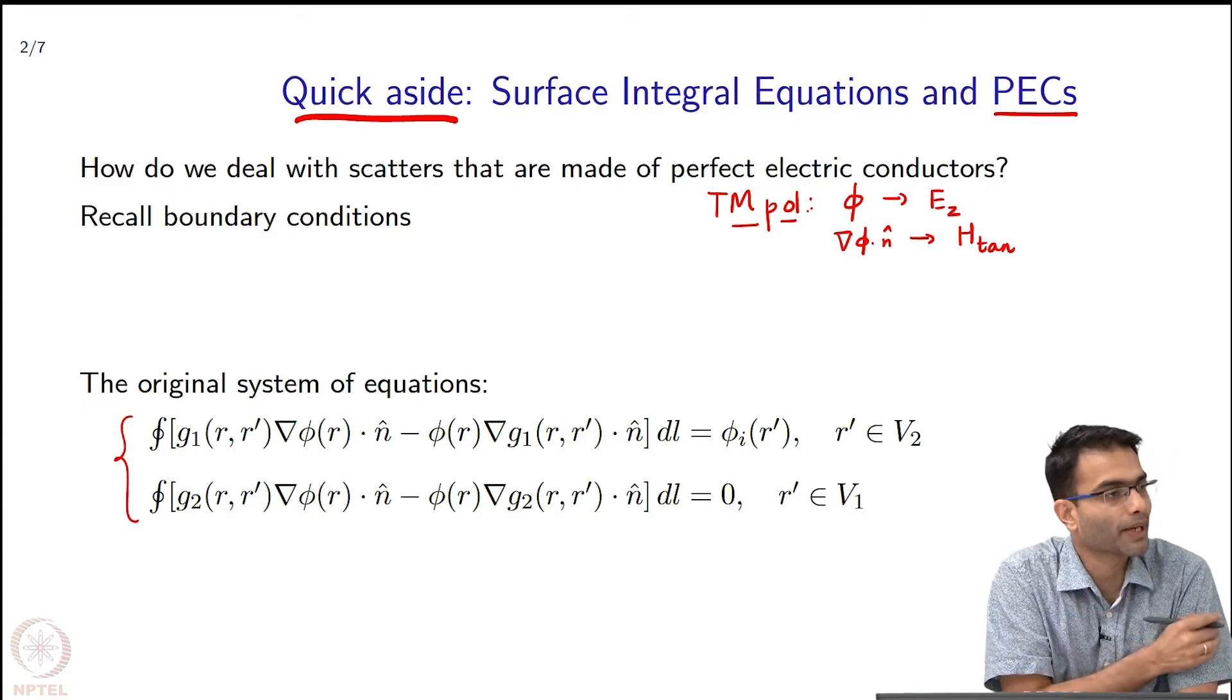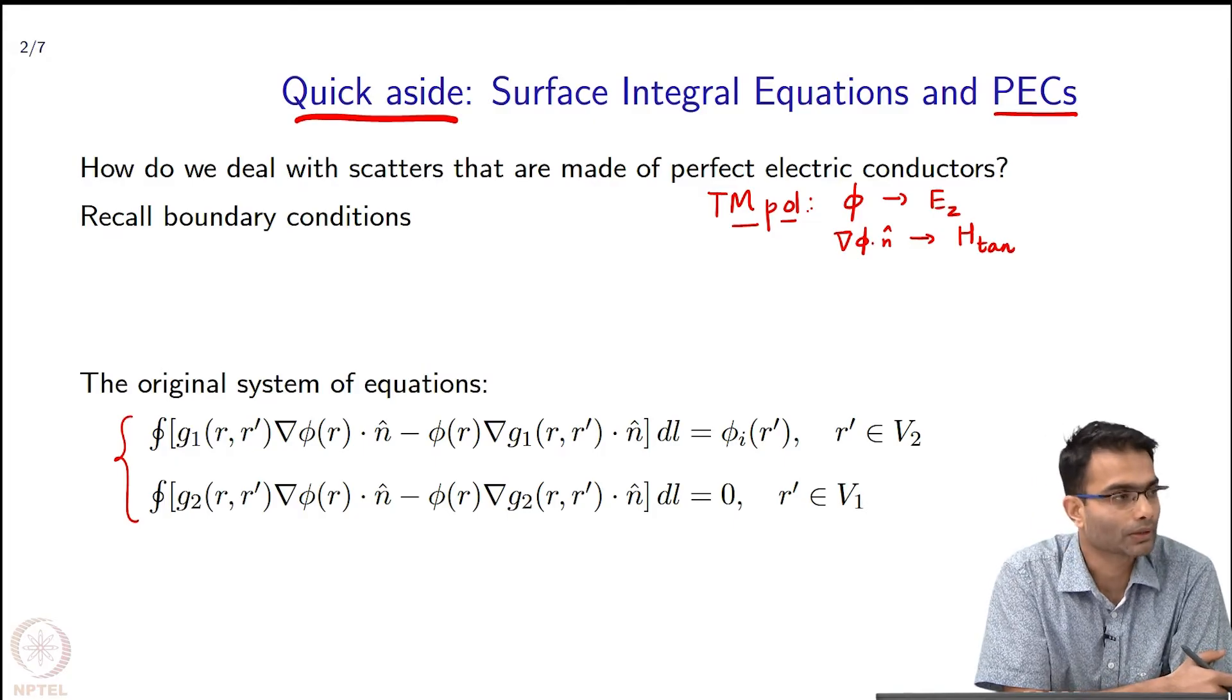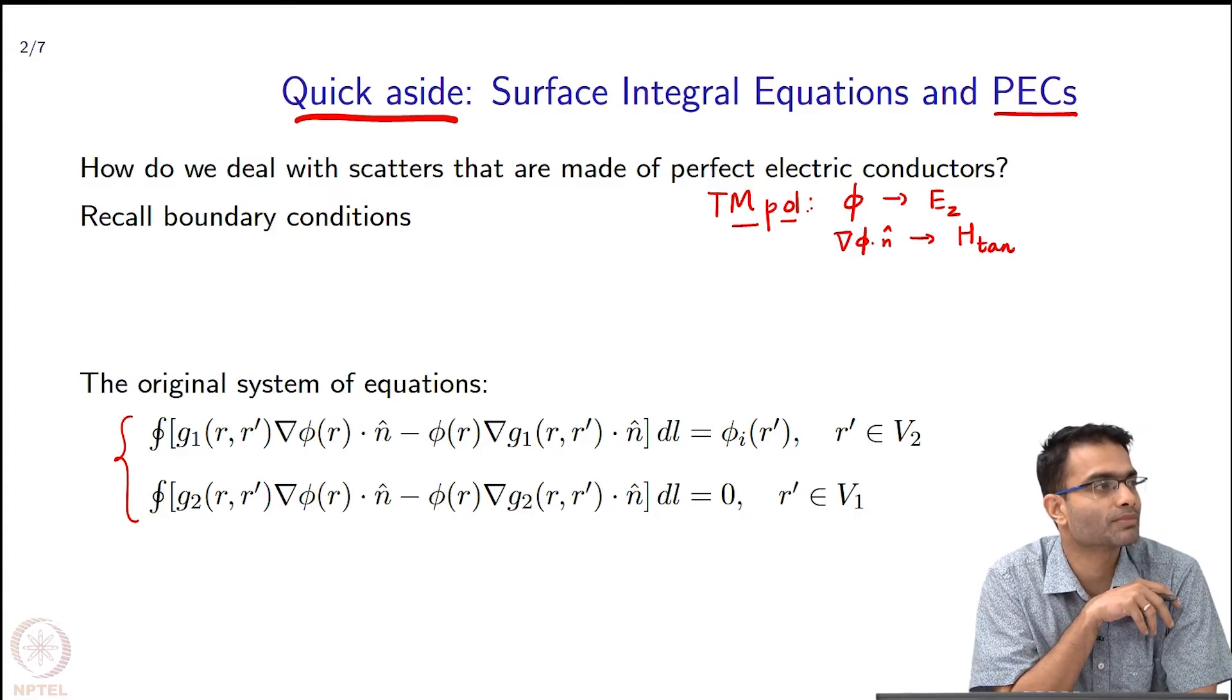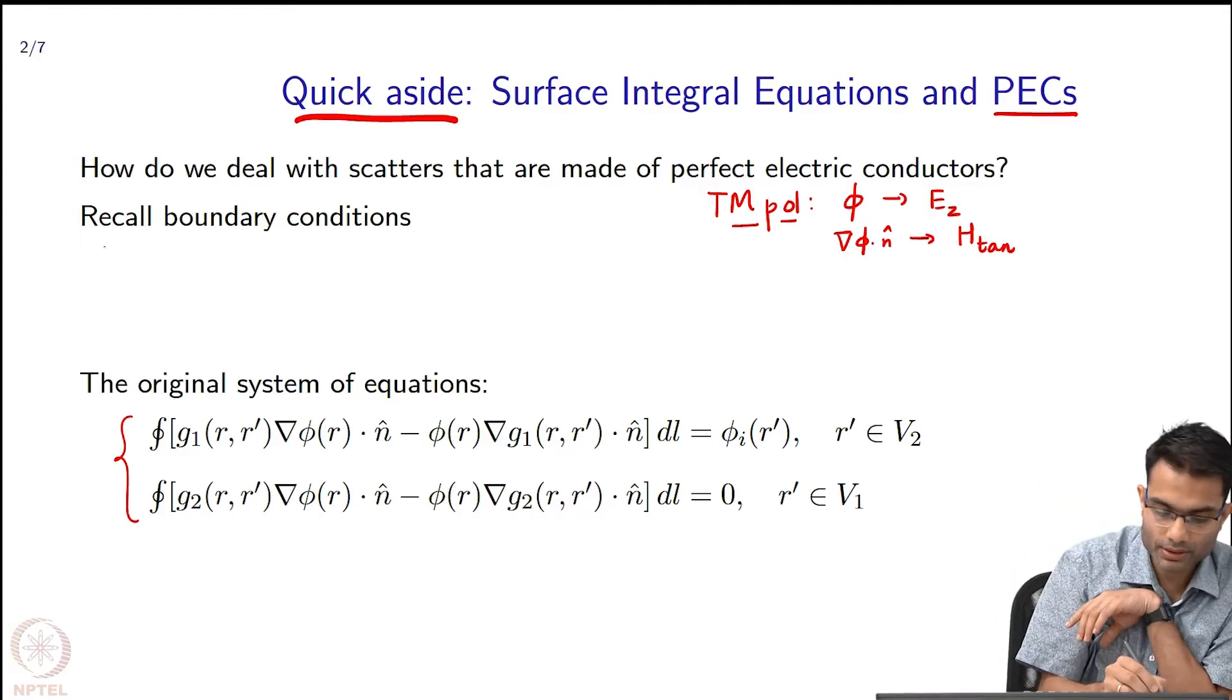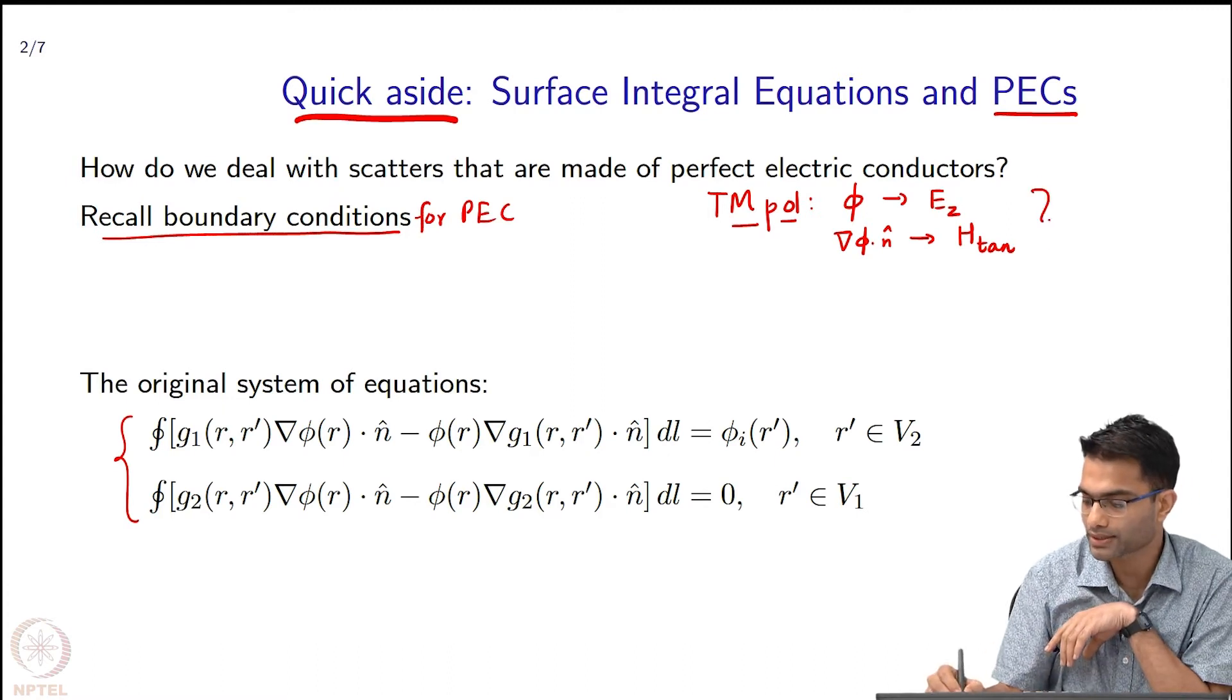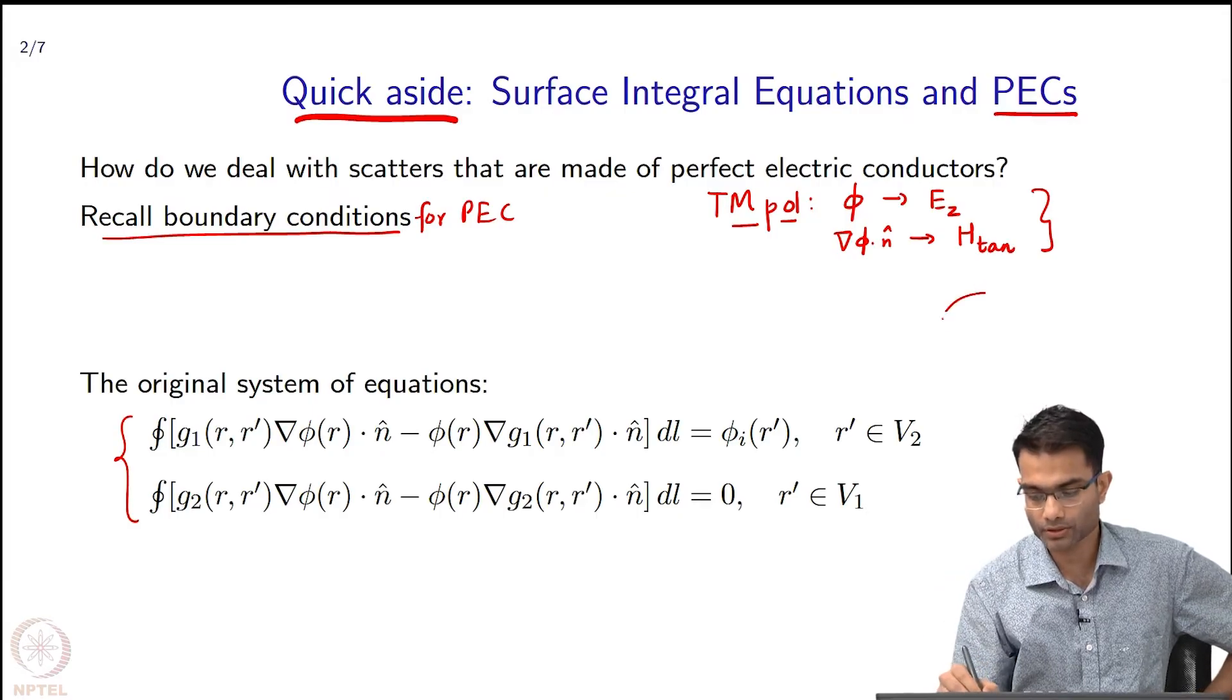So, if the conductor is made, I mean if the object is made out of a perfect electric conductor, what are the—I mean, should we just use these system of equations as is or should we change them somehow? So, what are the boundary conditions? What do boundary conditions for PEC say? Are any of these two guys 0 or both are non-0? E tangential 0. E tangential, right.